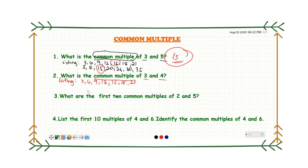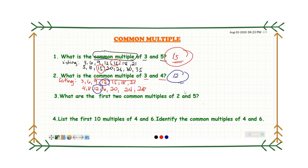Now let's do four: four, eight, twelve, sixteen, twenty, twenty-four, and twenty-eight. These are the multiples of four. Now we are ready to find the common multiple of both three and four. Both three and four have twelve as a multiple, so therefore the common multiple of three and four is twelve.